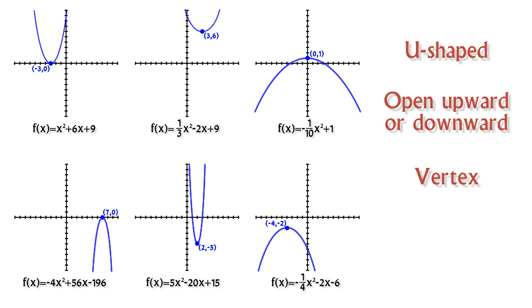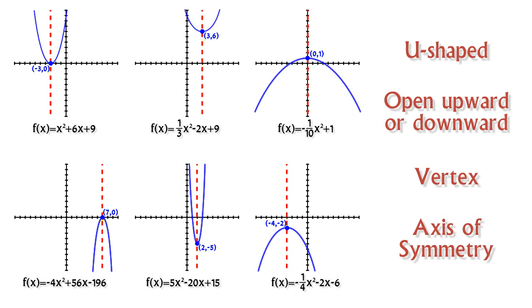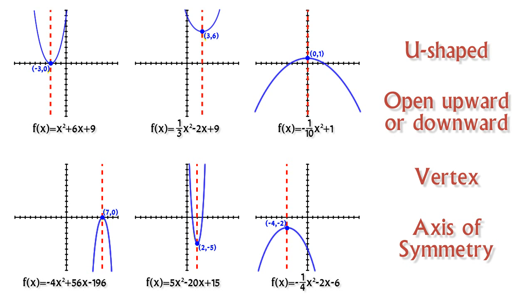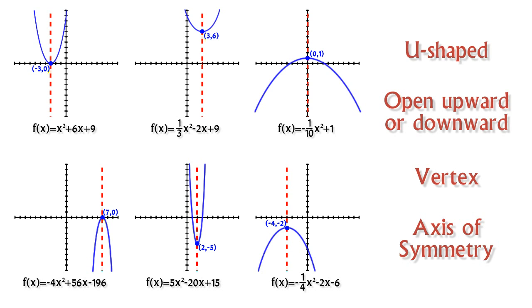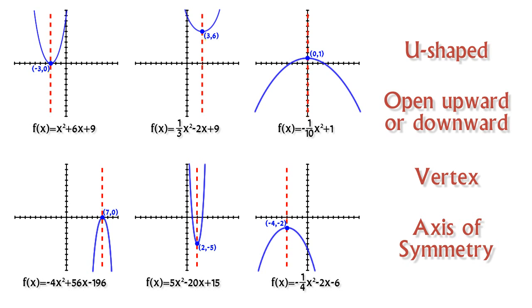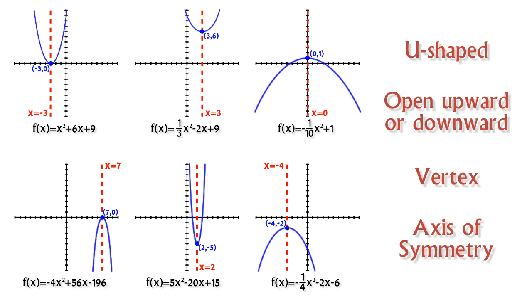And lastly, each parabola has an axis of symmetry. This is the vertical line that goes through the vertex that splits the parabola right down the middle. Each part of the parabola is a mirror reflection of the other over the axis of symmetry. Each axis of symmetry will have an equation of the form x = h, where h is the x-coordinate of the vertex.